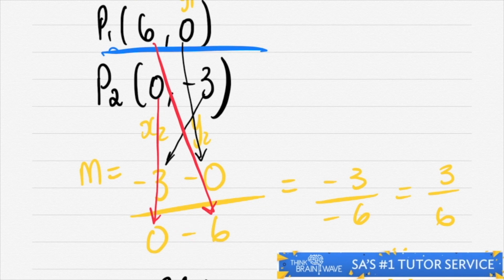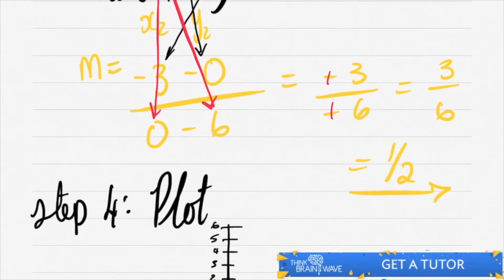So with that said, you now have minus three over minus six, giving you three over six, because the negative signs cancel each other out. You're then left with one over two. That is your gradient.